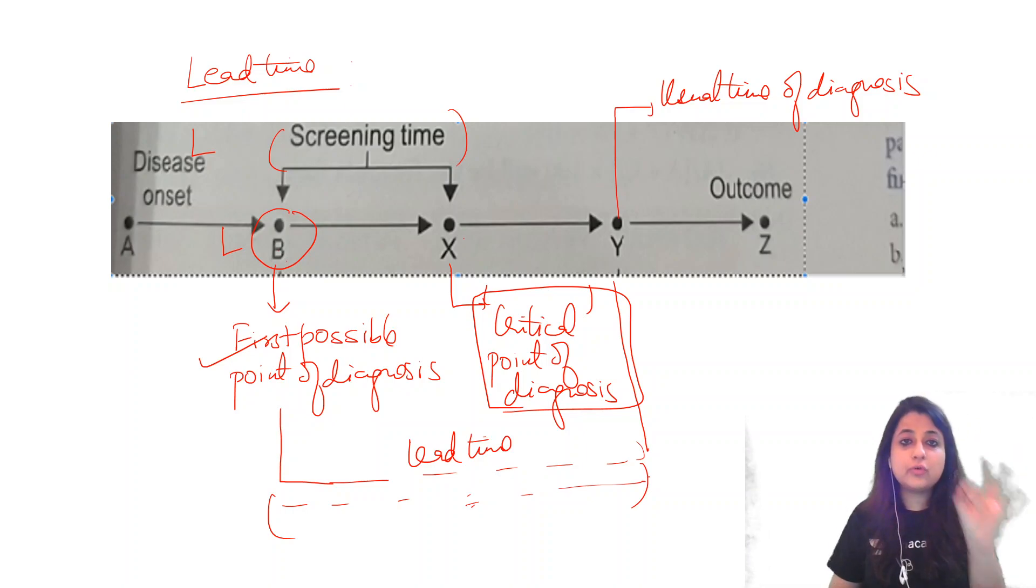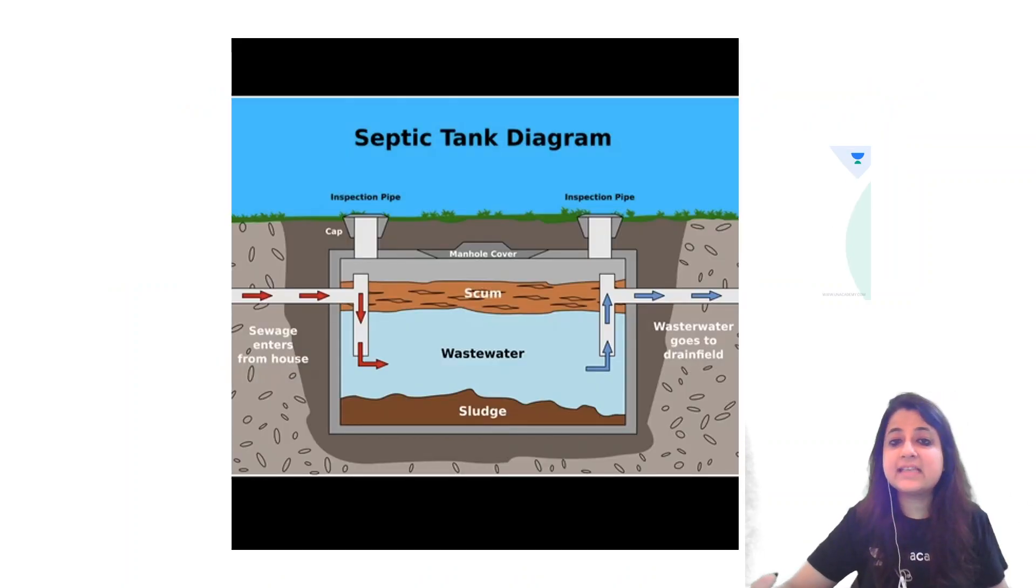then I will be able to prolong the survival. I will be able to prevent diabetic retinopathy from happening. So these are the two very important points. The interval between B and Y is known as lead time and between B and X is screening time. Let's see the next image for the day. This is septic tank diagram.